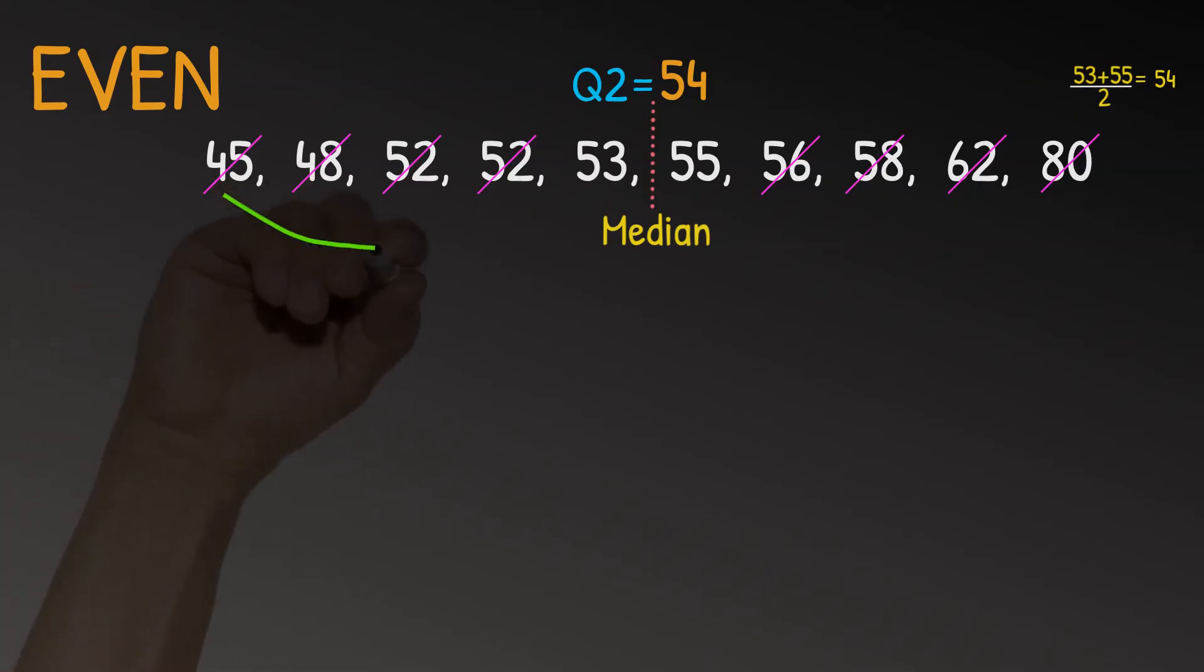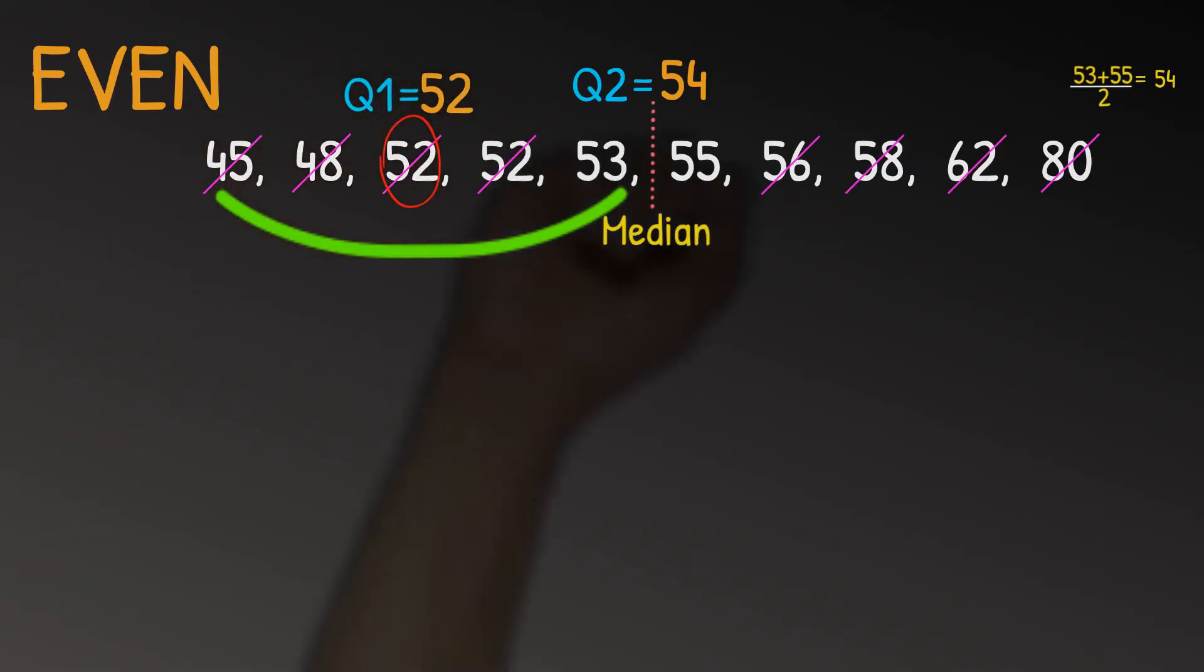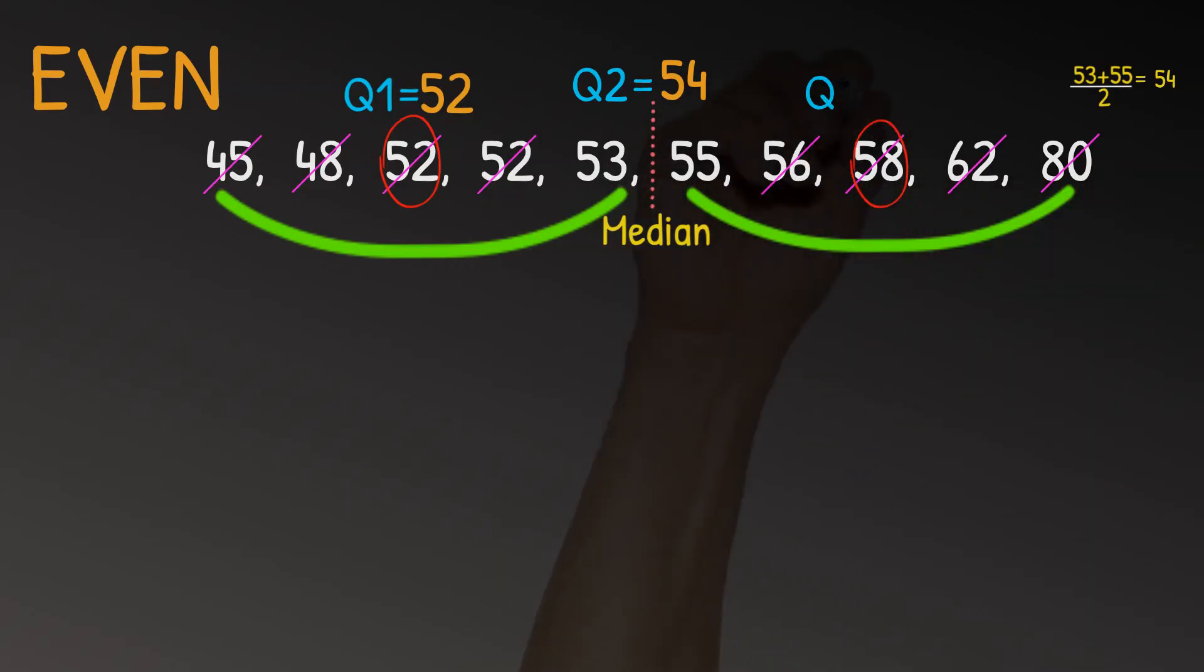Now, in this scenario, Q1 is the middle of these five numbers, which we can see fairly clearly is 52. And Q3 is the middle of these five numbers, which we can see relatively easily is 58.